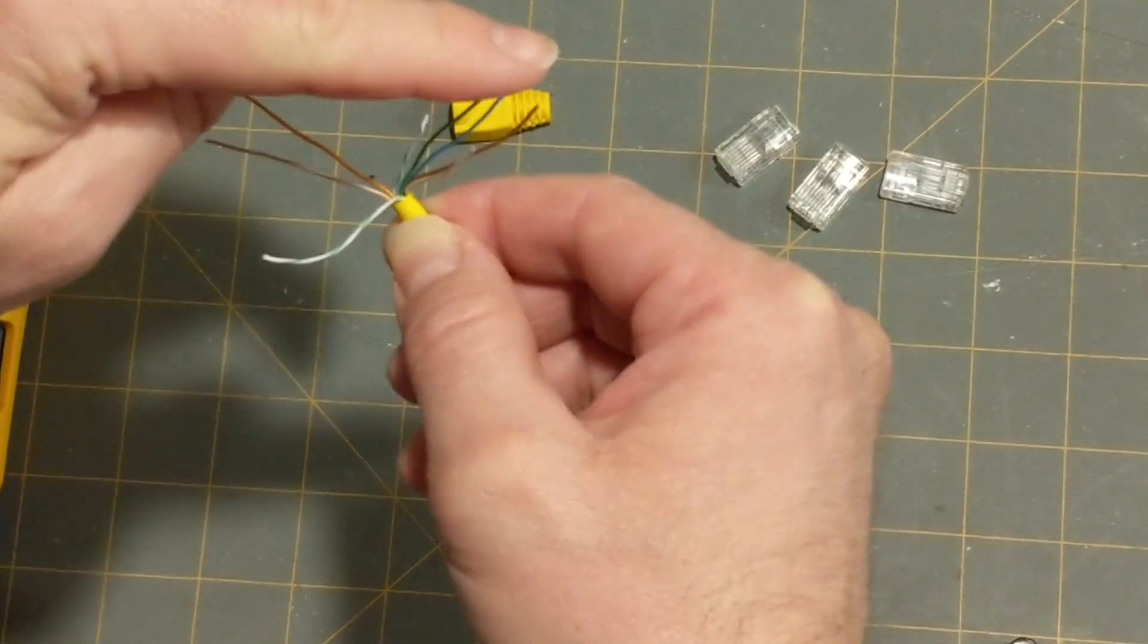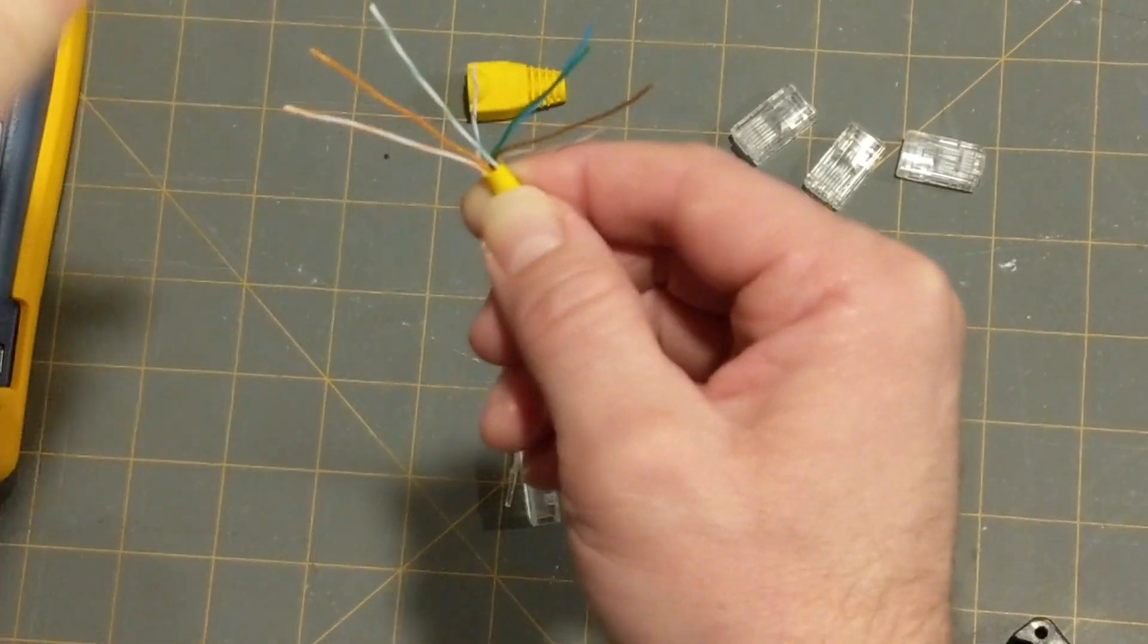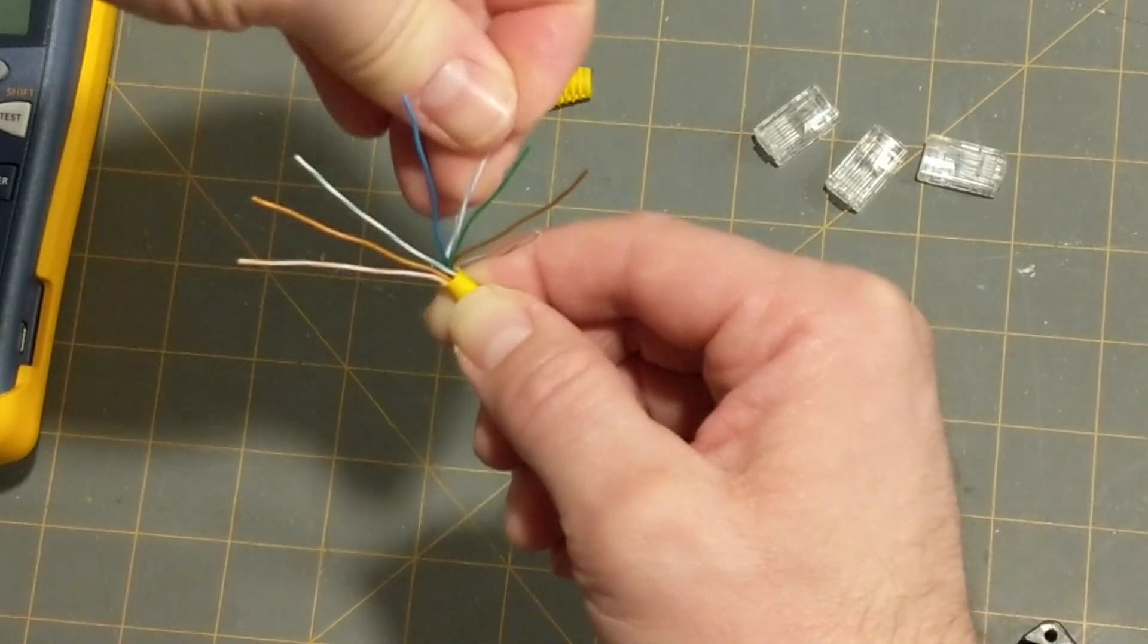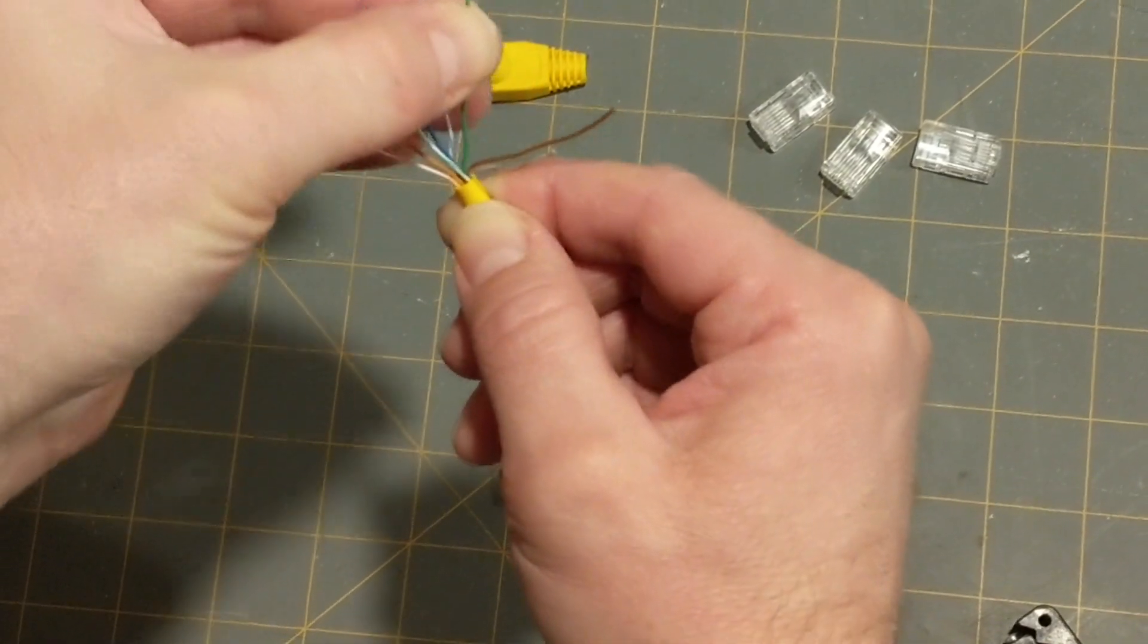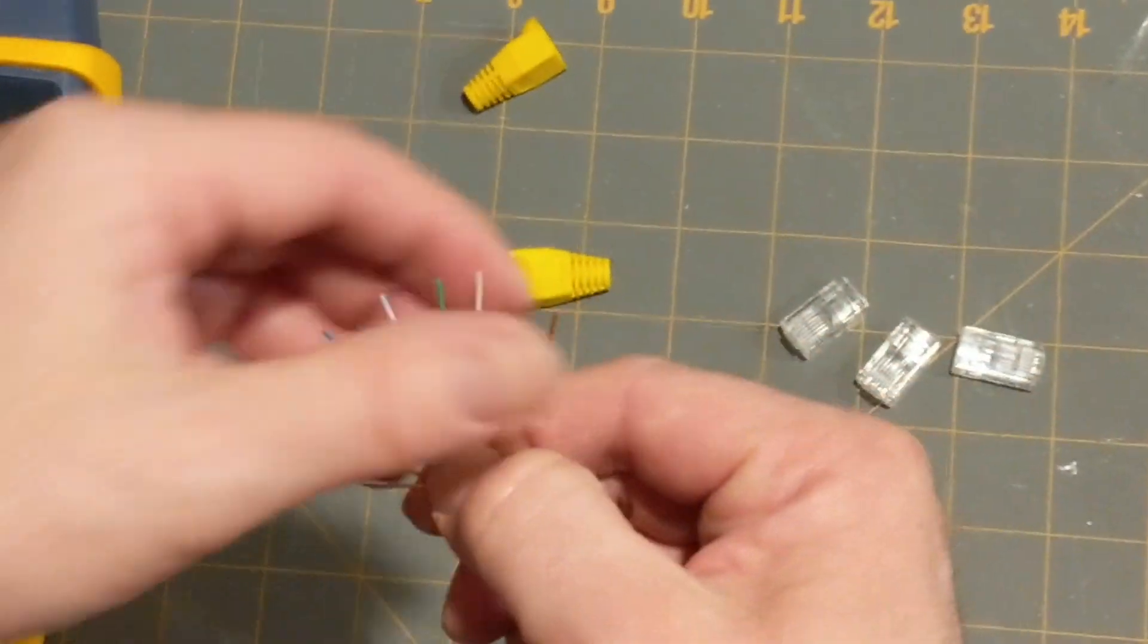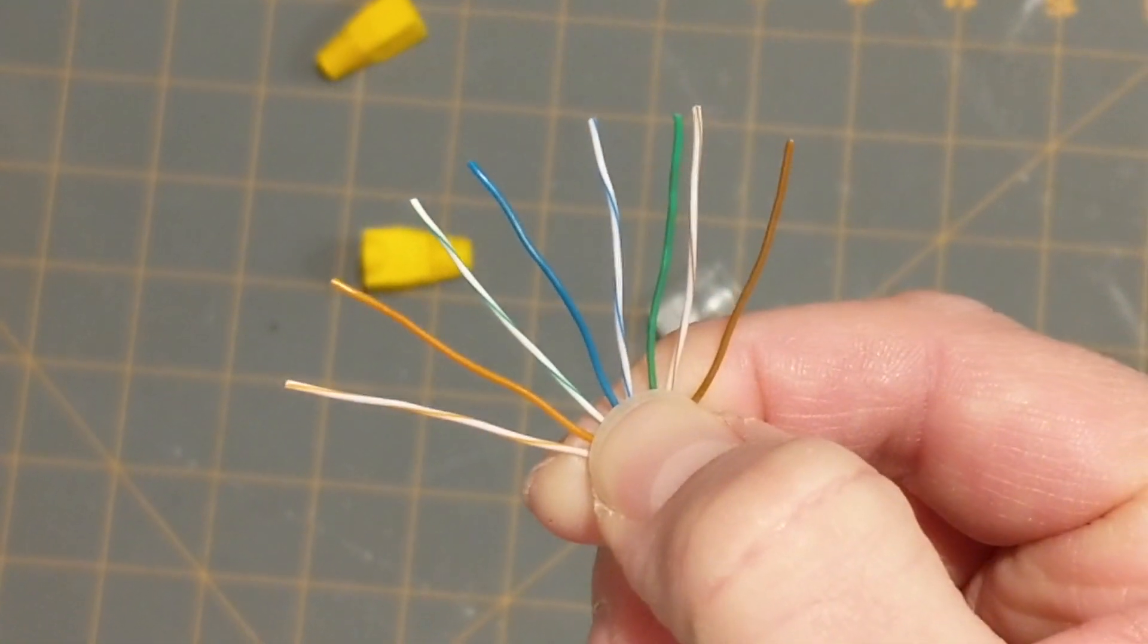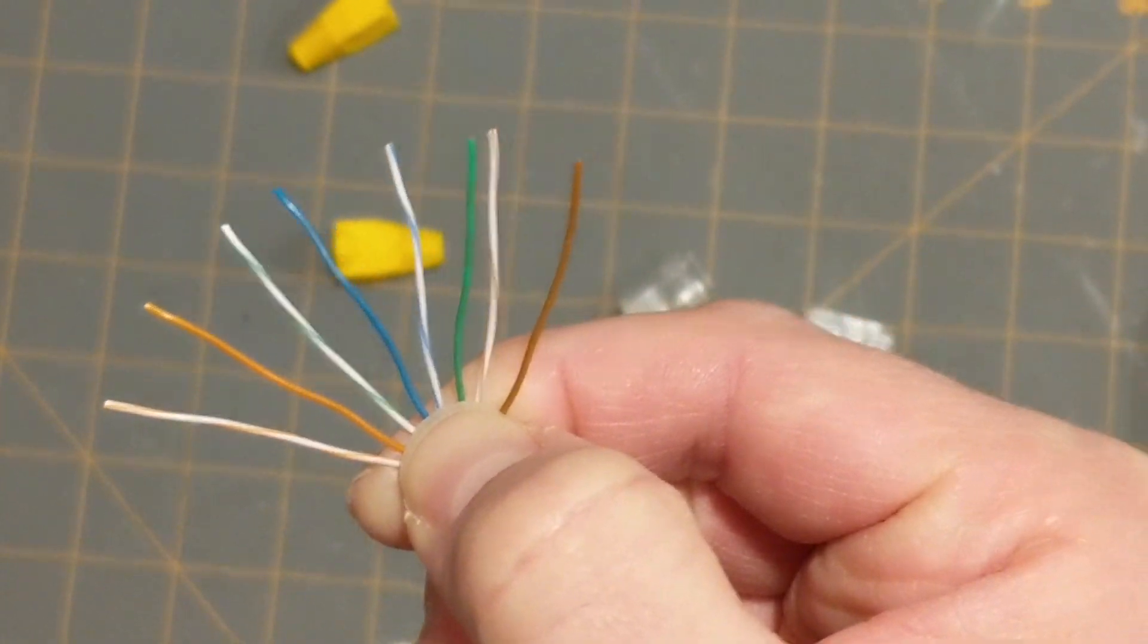Then, we're going to find the green one here and bring it up next. White-orange, orange, white-green. Then, we bring up blue. Then, we bring up white-blue. And then, the green. And then, white-brown and brown. So, this is the arrangement you're looking for. White-orange, orange. White-green, blue. White-blue, green. White-brown, brown.